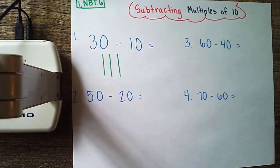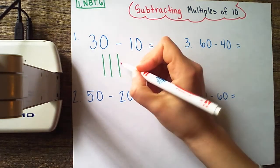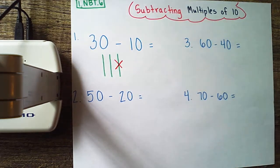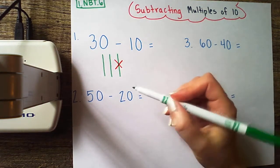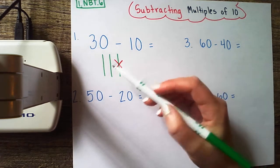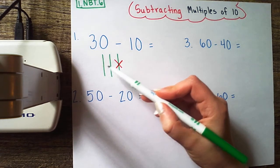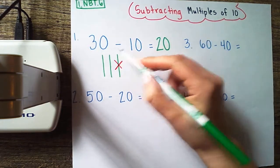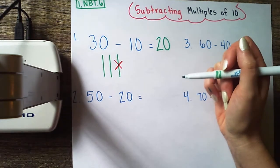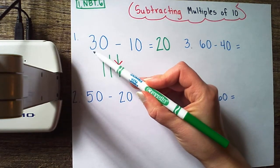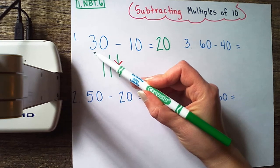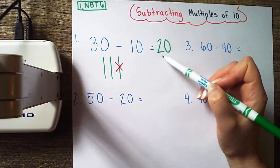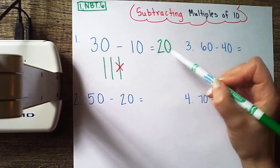Now I'm subtracting. Subtract means to take away, so I'm going to cross out 1 ten. Whatever I have left is my difference or my answer. I'm left with 2 tens, or 10, 20. So 30 minus 10 equals 20, which makes sense because 3 minus 1 is 2, or 3 tens minus 1 ten equals 2 tens.